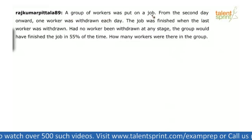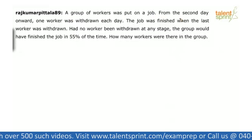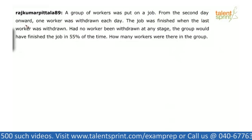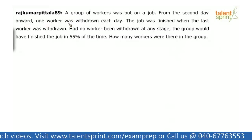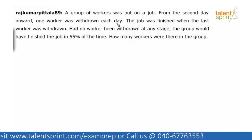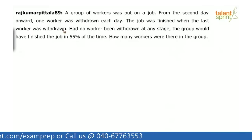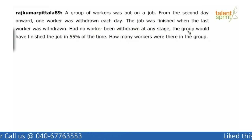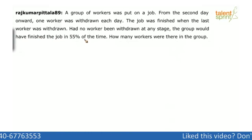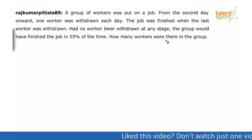A group of workers was put on a job. From the second day onward, one worker was withdrawn each day. The job was finished when the last worker was withdrawn. Had no worker been withdrawn at any stage, the group would have finished the job in 55% of the time. How many workers were there in the group?